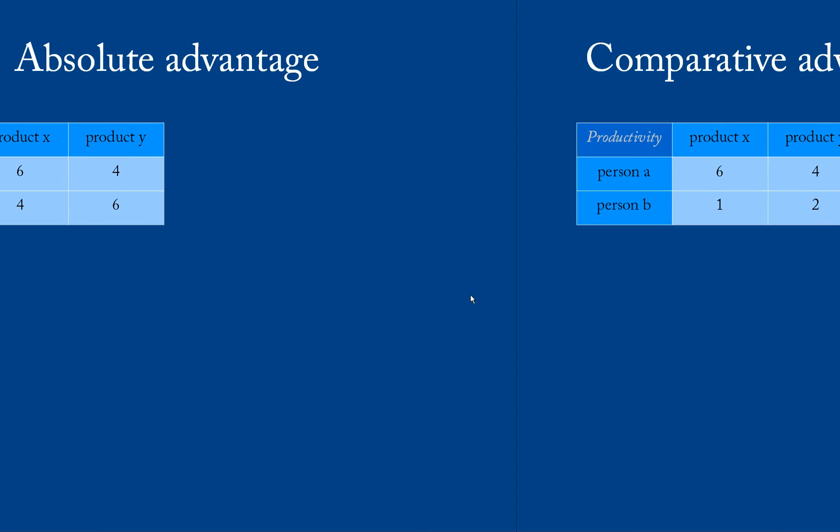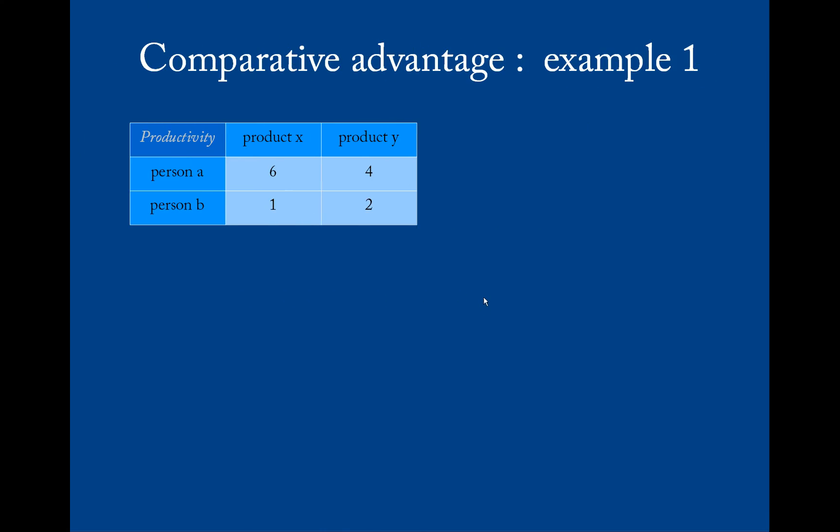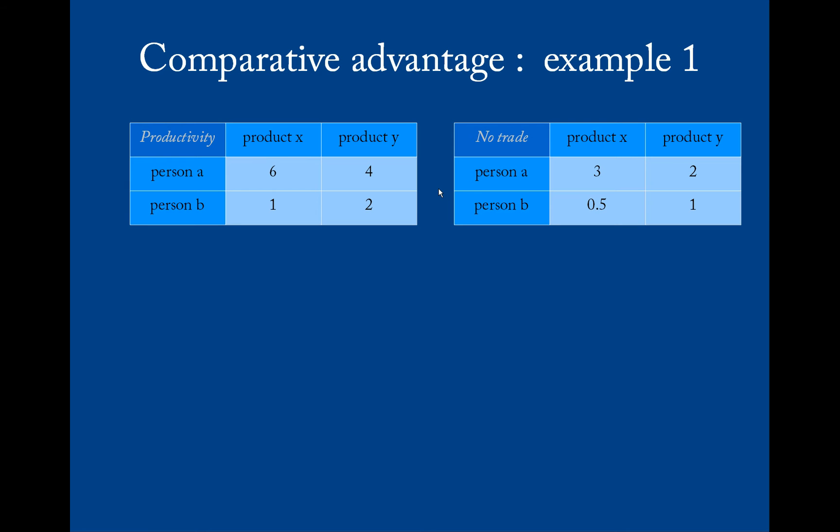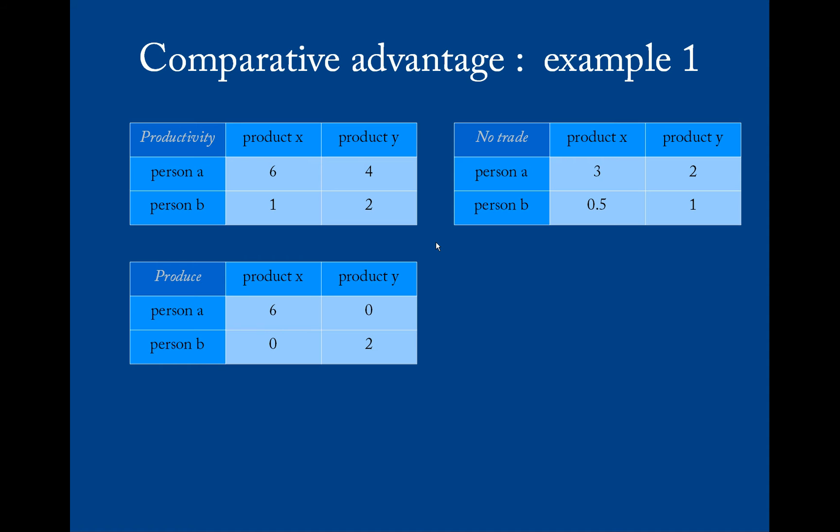Now let's make the example a little bit more complex. Suppose person A is better at producing both products X and Y. If they would split their day in half and produce both products themselves, this is what that would look like.